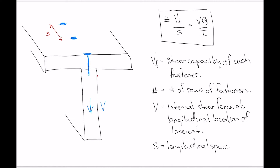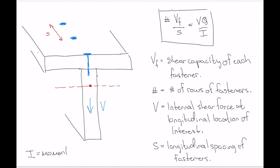I is the moment of inertia about the centroidal axis that's perpendicular to the internal shear force V — same as in the equation for transverse shear stress. Q is A'·Ȳ', where A' needs to be chosen so that you've got a shear force at the interface where the fastener is being sheared. A' needs to be a portion of the cross section that is only held on by fasteners.